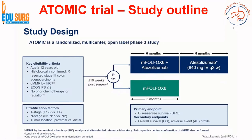The ATOMIC trial is a randomized, multicenter, open-label phase 3 study. Eligibility criteria include R0 resected, histologically confirmed stage 3 colon adenocarcinoma with deficient mismatch repair, and no prior chemotherapy or radiation. Substratification was done into low-risk — T1 to T3, N1 — and high-risk groups — T4 and N2.